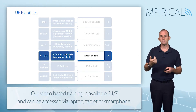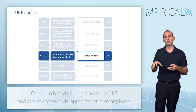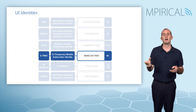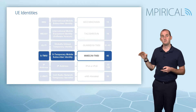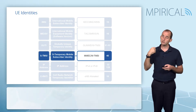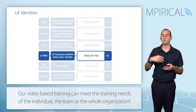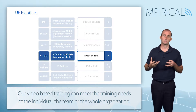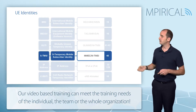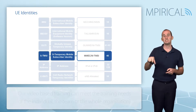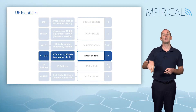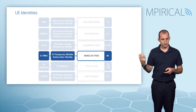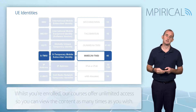The S-TMSI is a shorter version of the GUTI. Once we've attached to the network and been given our GUTI, particularly in the RAN, you actually use the S-TMSI rather than the GUTI, just to shorten the number of ones and zeros sent in order to identify the subscriber. The S-TMSI is actually derived from the GUTI.